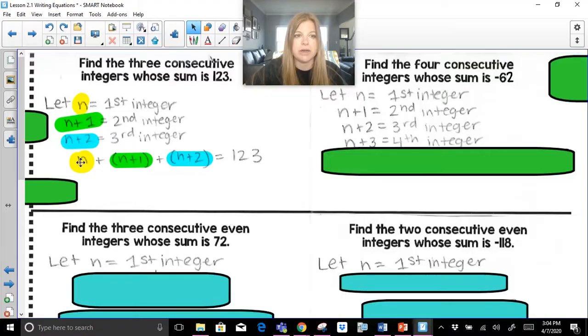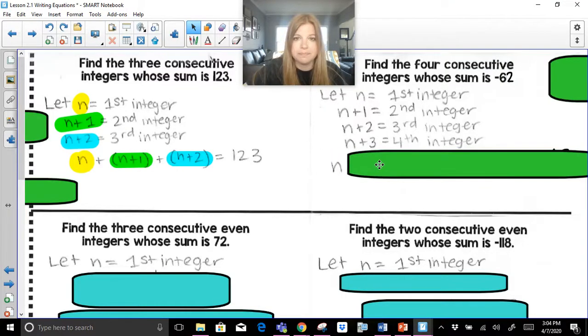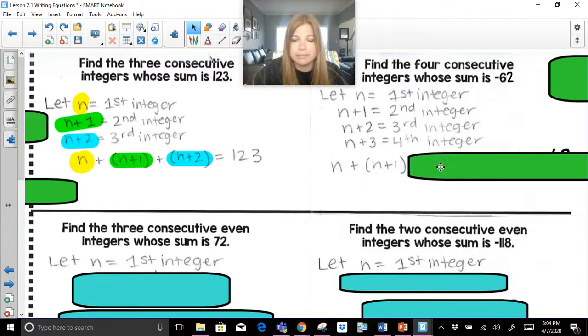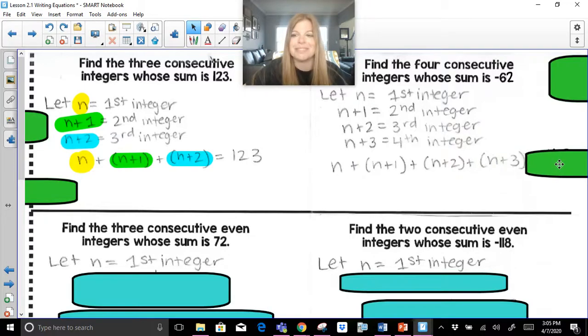But now it's saying I need four integers. So the next natural progression is to make n plus 3 the fourth integer. So ready? I'm going to follow this same format that I did before. n plus n plus 1 plus n plus 2 plus n plus 3 equals negative 62.